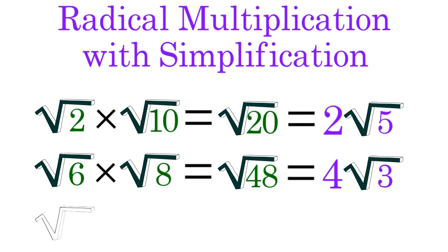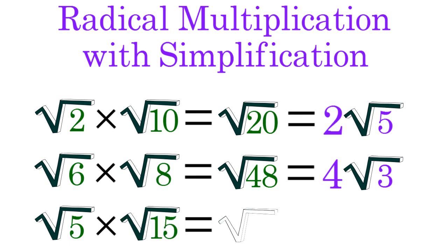And multiplying radical 5 by radical 15 results in a product of radical 75, which you can simplify to 5 radical 3.